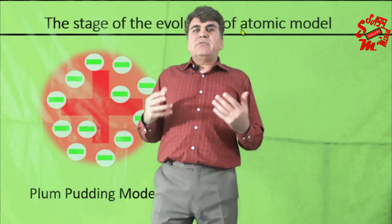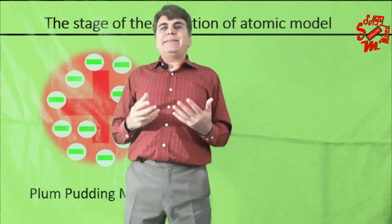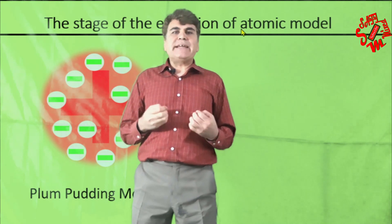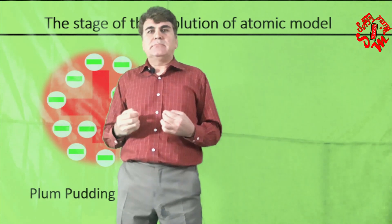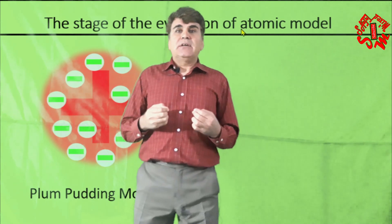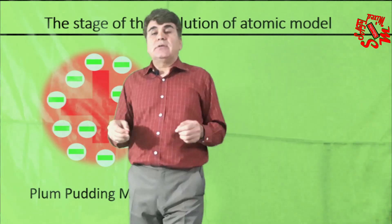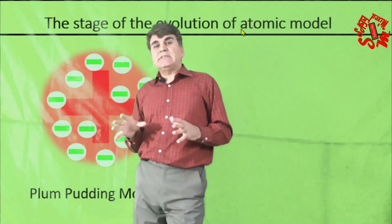However, it was not equally settled till the end how the electrons were distributed under equilibrium within the plum pudding atom. Nevertheless, Thomson was awarded with a Nobel Prize for this work in 1906.